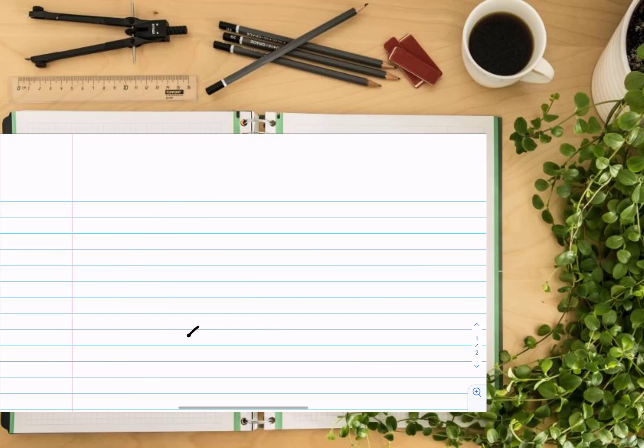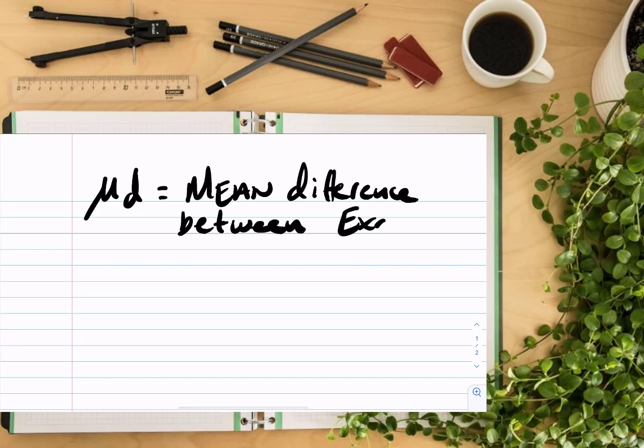So as an example, we looked at different alternative hypotheses, one of which was if there's a difference between exam one and exam two scores for GVSU students. So if I were to write that in a parameter definition, I would say mean difference between exam one and exam two scores for GVSU students.